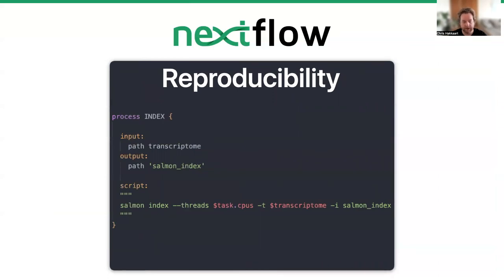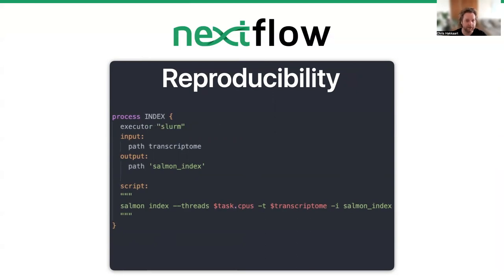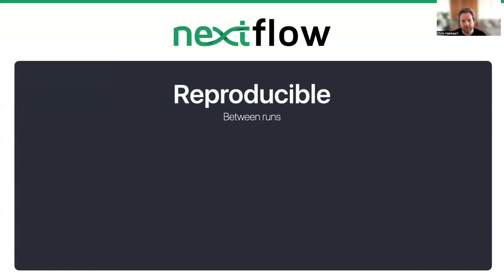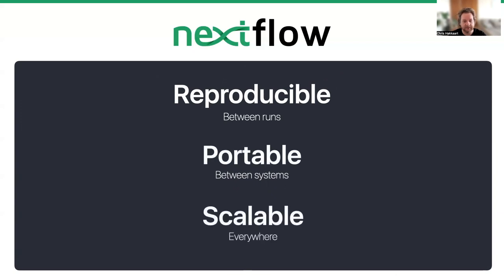Reproducibility is really important with Nextflow. You can quickly and easily change your software manager by adding a directive at the top of your process block — for example, switching from Conda to Docker or Singularity in a single line. Similarly, you can change the execution platform by specifying Executor Slurm to run on an HPC, or scale to cloud providers very quickly and easily. Nextflow helps with reproducibility between runs, is portable between systems, and is scalable everywhere.